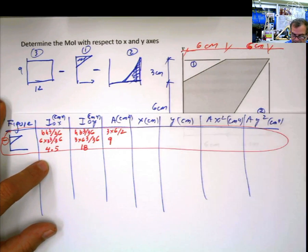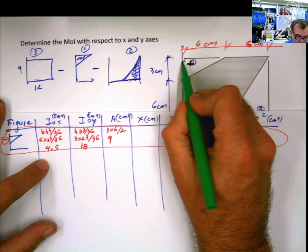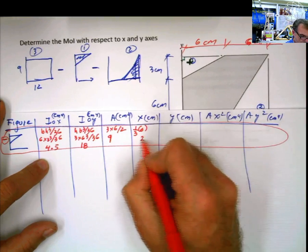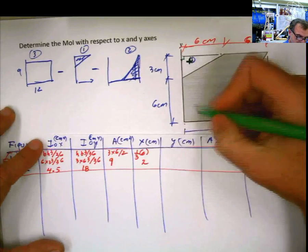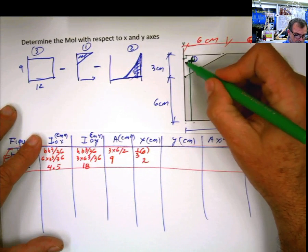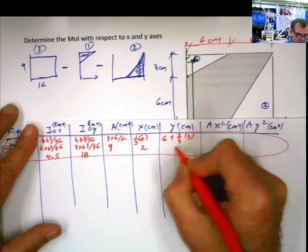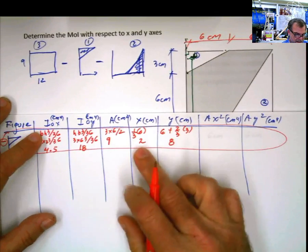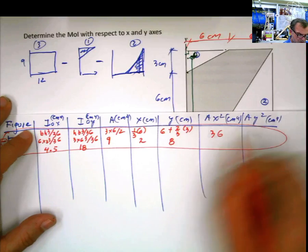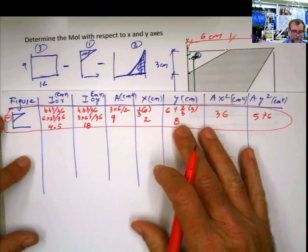Now, what is x? x is the distance measuring x with respect to my axis. The center of figure 1, I know that from this point to here is 1 third of the base. So that's going to be my x, 1 third of the base, which is 6. That's 2. What is y? y is the distance measured from here to there. And what is that distance? That distance is 6 plus 2 thirds of the height. 6 plus 2 thirds of 3. 6 plus 2 is 8. And now you multiply 9 times 2 squared, which is 4. That's 36. And 9 times 8 squared, which is 64, is 576.